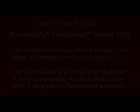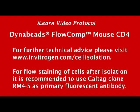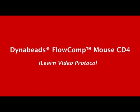Now your cells are ready for downstream applications such as flow analysis, cell culture, or adoptive transfer. For further technical advice, please visit www.invitrogen.com slash cell isolation. For flow staining of cells after isolation, it is recommended to use Caltagclone RM4-5 as primary fluorescent antibody.